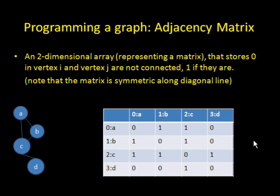A second way of representing graphs is in the adjacency matrix. If you know what a matrix is from math classes, you probably know that it's basically a table. And in programming, it would be a two-dimensional array representing a matrix that stores zero if vertex I and J are not connected, or one if they are connected. And it would take some representation of that anyway. You can notice, if you look at the diagonal line here, that the matrix seems to be symmetric along that diagonal line, which is an interesting property which might help you program a more efficient algorithm for finding what connects to what.